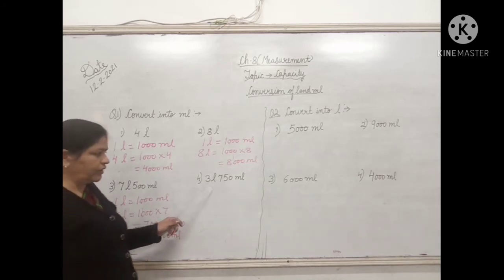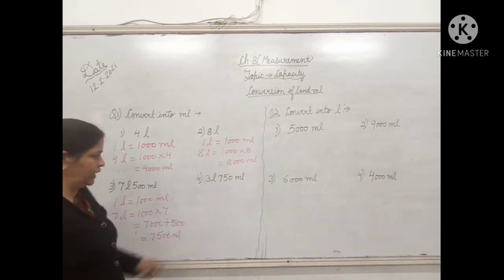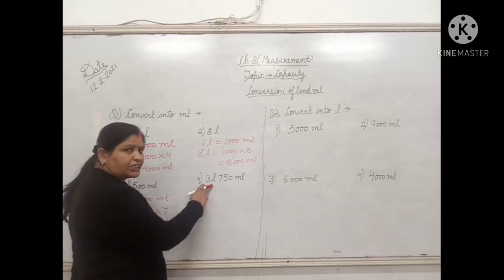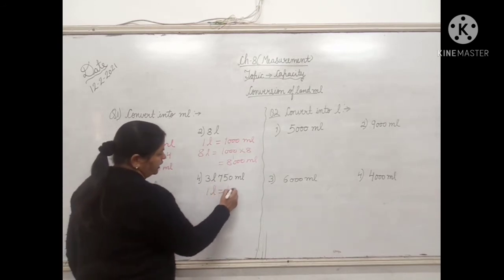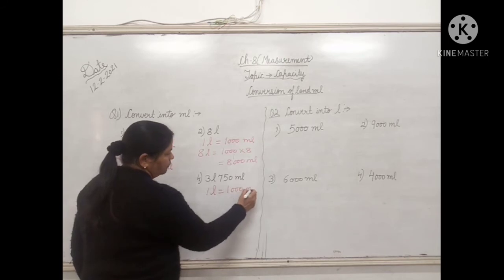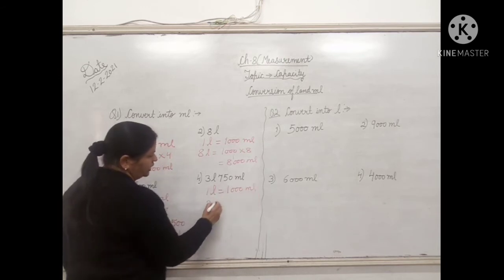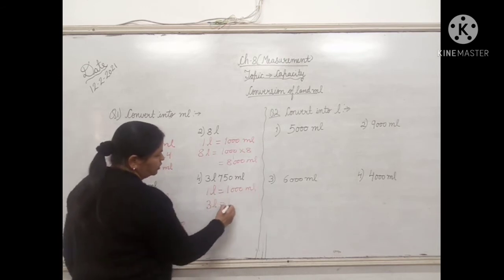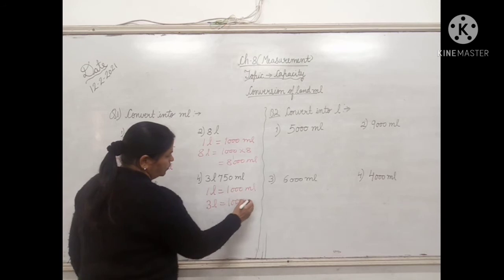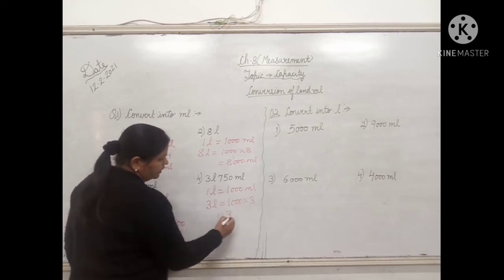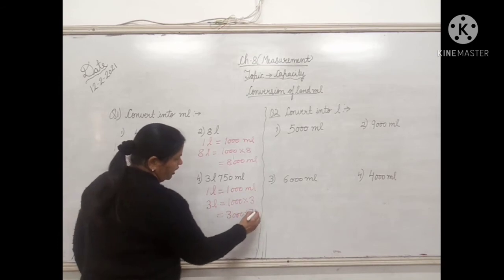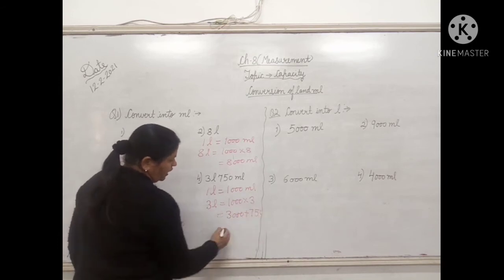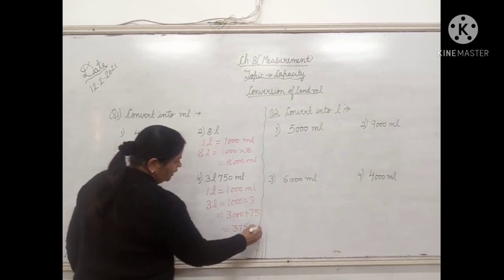Next question: 3 liters 750 milliliter. Again we will convert liters into milliliter first. So 1 liter equals 1000 milliliter. Therefore 3 liter equals 1000 into 3, that is 3000, plus 750. So the answer will be 3750 milliliter.